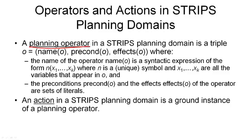A planning operator in the STRIPS representation is simply a triple — it consists of three different things: a name, the preconditions of the operator, and the effects of the operator. The name is a unique symbol that we can use to refer to this operator; it must be unique, meaning no other operator can have the same symbol. It also consists of some parameters which characterize the objects manipulated by this operator.